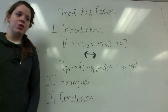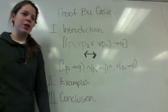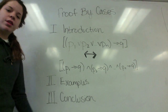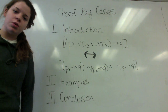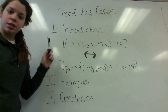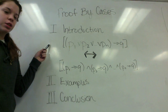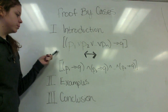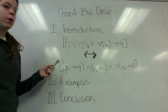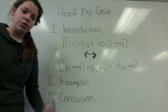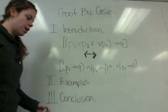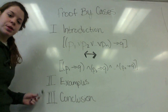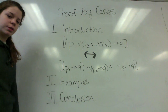We're group B31 and we're going to be proving proof by cases. The way this mini-lecture is going to work is we're going to start with an introduction and a basic overview of what proof by cases actually is, then go to a few examples and a conclusion.